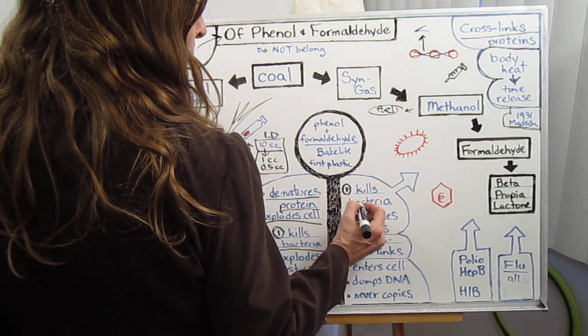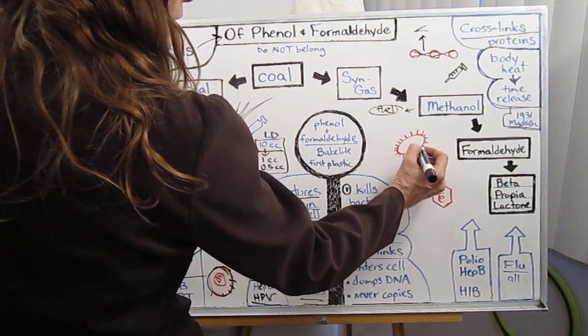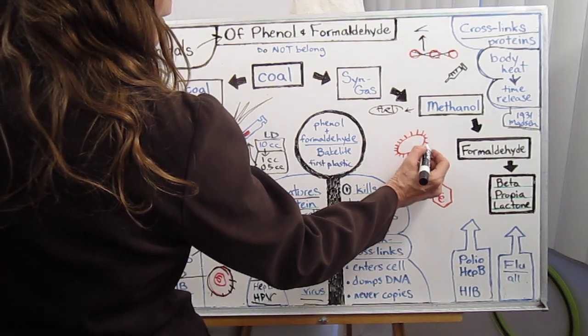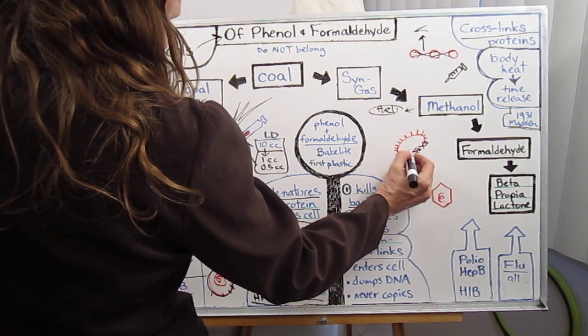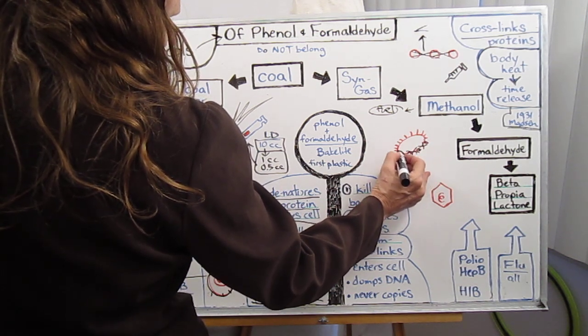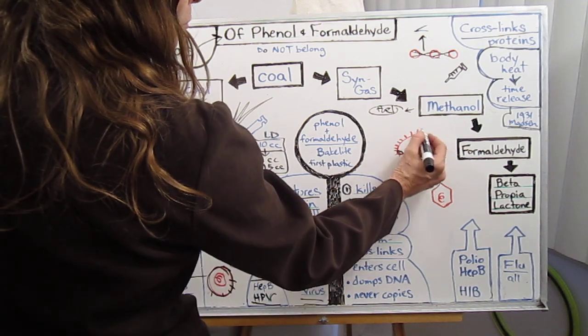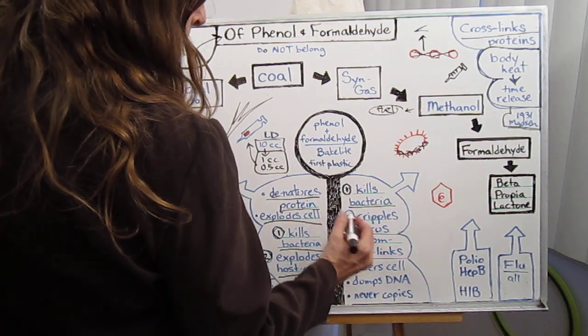So how does formaldehyde work? Number one, it kills these bacteria. Here's the bacteria, the flagella, and cross-linking its proteins so that they cannot function will kill bacteria. They need their membranes functioning very well.